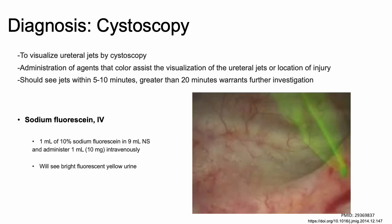The goal of cystoscopy is to visualize ureteral jets. You can also administer agents of color to assist in visualization of the jets — oftentimes we won't, but if it is difficult to see, we will call for an agent of color. You should see jets within 5 to 10 minutes of your cysto. Greater than 20 minutes warrants further investigation.